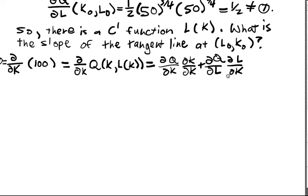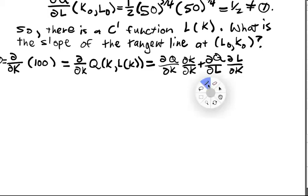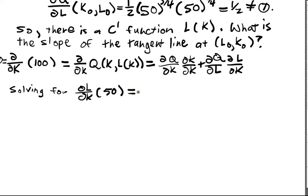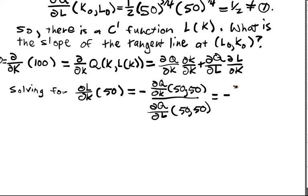And now we just have to solve for this partial derivative here. We know this is equal to zero, so solving for dL/dK at 50, that is at that particular K naught, we have its negative dQ/dK evaluated at the point 50, 50 divided by dQ/dL evaluated at the point 50, 50, which equals negative 3 halves over 1 half, which equals negative 3.